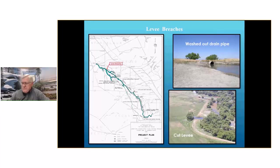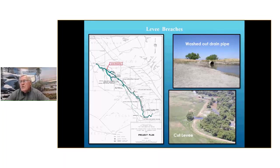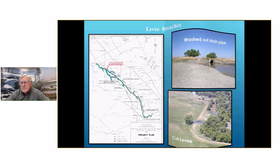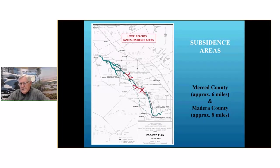We've looked at putting in weirs so you can control flows in case inside flows become a problem for the outside. But our operation approach would be: if there's water on the outside, you pull all the boards out of the weir so the water can get in. The Army Corps' response to that is that it's adverse to what the real purpose of a weir is — trying to keep water out. Also, a hot topic for quite a few years is subsidence areas in both Merced County and Madera County.